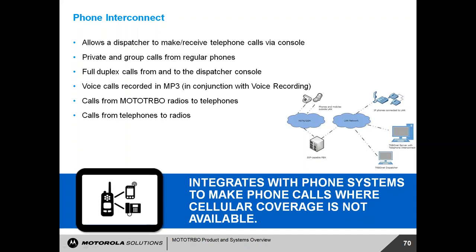Phone interconnect is supported on these systems — conventional, IP Site Connect, and CAP Plus all support it. Generally the system interconnects via an IP SIP interface — no need for old TAC units or analog lines at the repeaters; this all comes through the application. We set up the radios to support phone patch calls; the call comes into TurboNet, is recognized as a phone patch call, and connects to a SIP interface. Users from the outside world — on a landline or mobile phone — can call into the network, and the network can dispatch calls to radio users, or vice versa, with a radio user setting up a call to a mobile or office phone extension.